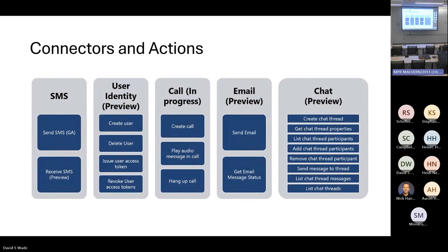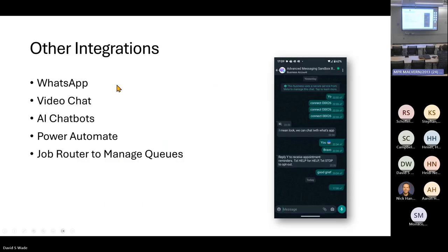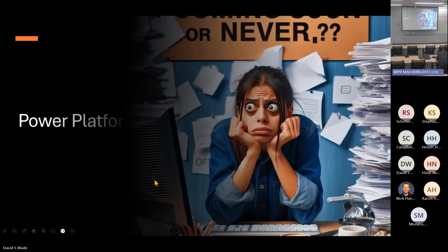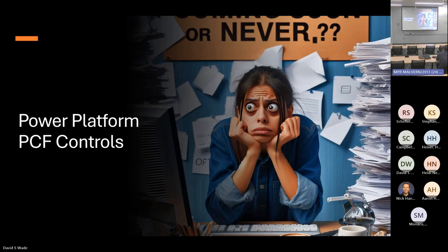Other integrations include WhatsApp, video chat, and AI chat so that you can have people come in and chat. Power Automate and job router to message queues. WhatsApp is extremely cool because it allows people who are not Teams-centric to communicate with you. You can have Microsoft 365 Teams to Teams, custom app to Teams, or custom apps to custom apps — and underneath it all is ACS. There are power platform PCF controls coming out which are relevant to us, though still vaporware.